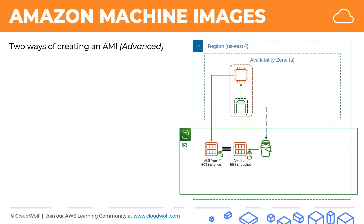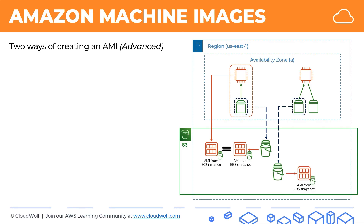This is not always the case, though. If we have an EC2 instance with two or more EBS volumes attached, and we create an EBS snapshot from just one of the volumes and then create an AMI from that snapshot, we'll have an AMI with only that one volume. But if we take the EC2 instance and create an AMI from the whole instance, then by default the AMI will include snapshots of each of the EBS volumes attached to the instance — and therefore these two AMIs are not going to be the same. This is a very important point to remember, especially for an exam: an AMI will include snapshots of each of the EBS volumes.